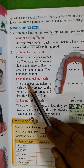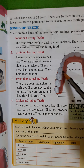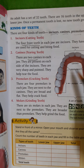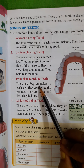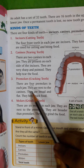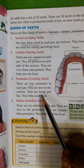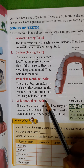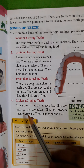Next we have the premolar, or the cracking teeth. There are two premolars on each side — two here and two here — so four in the lower jaw and four in the upper jaw. They are next to the canines, broad and flat, and they help in cracking food.